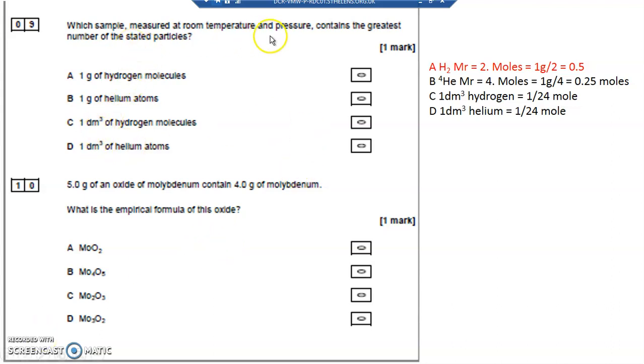Now here you need to know at room temperature and pressure, any gas, doesn't matter whether it's hydrogen or helium, 24 decimetre cubed is 1 mole. So 1 decimetre cubed is 1/24th of a mole. It doesn't matter whether it's hydrogen, helium, or any other gas.